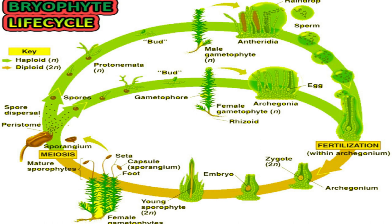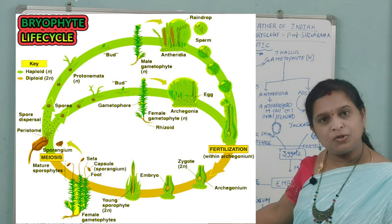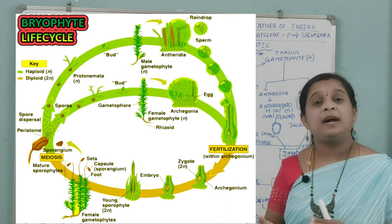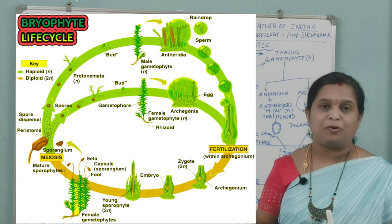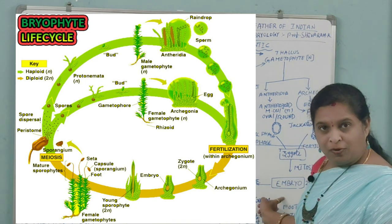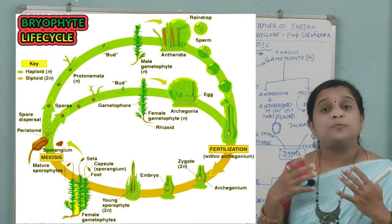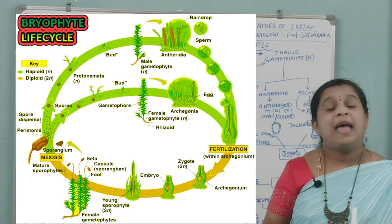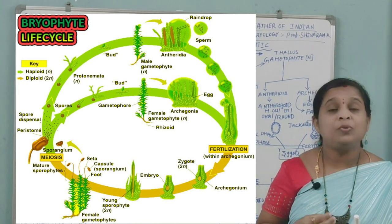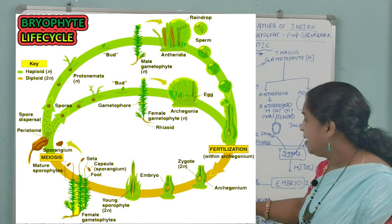When the antheridia and archegonia undergo fertilization, a zygote is formed. After mitotic divisions, the zygote produces an embryo, at which point the sporophytic phase of the life cycle begins. The life cycle is haplodiplontic — exhibiting a haploid (n) gametophytic stage and a diploid (2n) sporophytic stage. The embryo is 2n and develops into the sporophyte, which consists of a sporangium differentiated into three parts: the foot, seta, and capsule. The capsule produces spores.